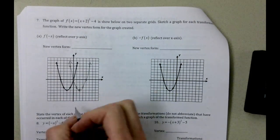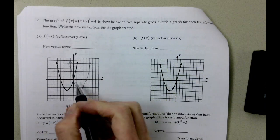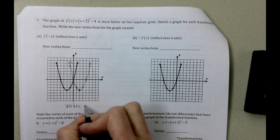And then our vertex form. Well, our vertex is (-2, -4).